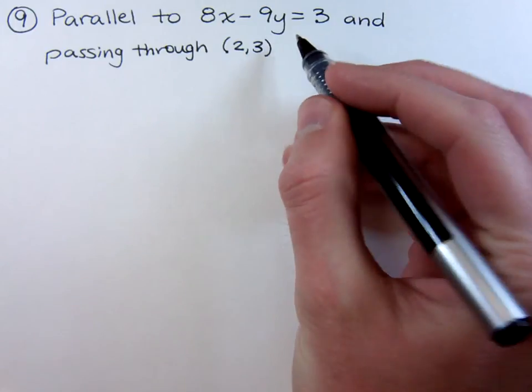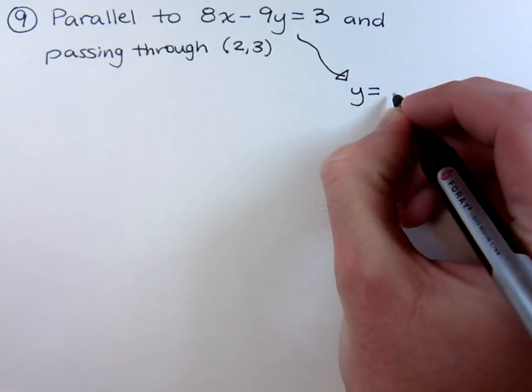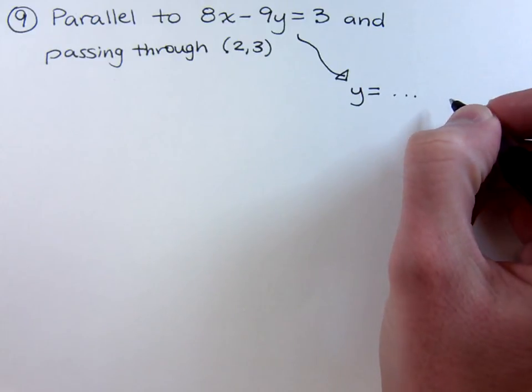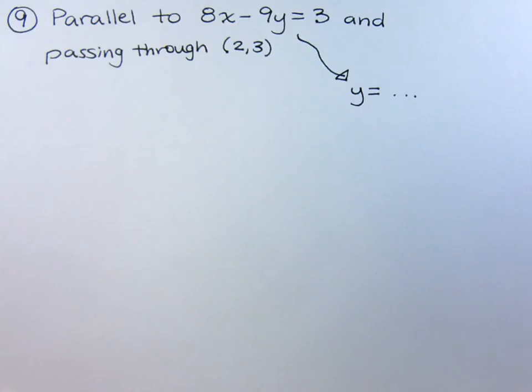You could take this guy, come over here up to the side, and find out what the slope is by solving for y. That could be quite messy, and you could run into fractions. I'll show you how to do that here in just a second, but first, let's do it the easy way.